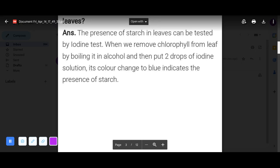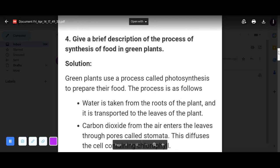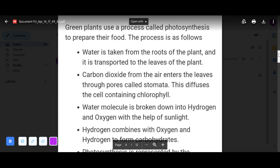Now next question: give a brief description of the process of synthesis of food in green plants. Solution is, green plants use a process called photosynthesis to prepare their food. The process is as follows: water is taken from the roots of the plant and it is transported to the leaves of the plant. Carbon dioxide from the air enters the leaves through pores called stomata. This diffuses the cell containing chlorophyll. Water molecule is broken down into hydrogen and oxygen with the help of sunlight.